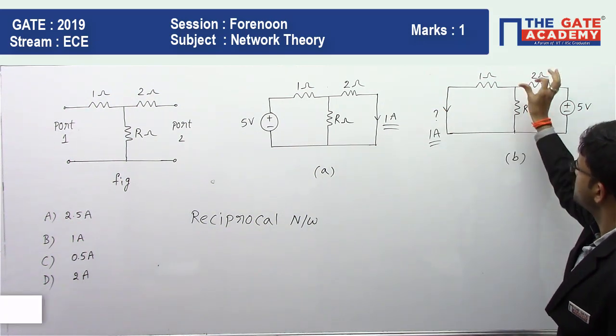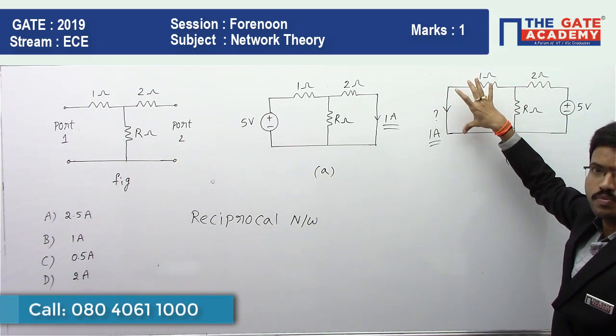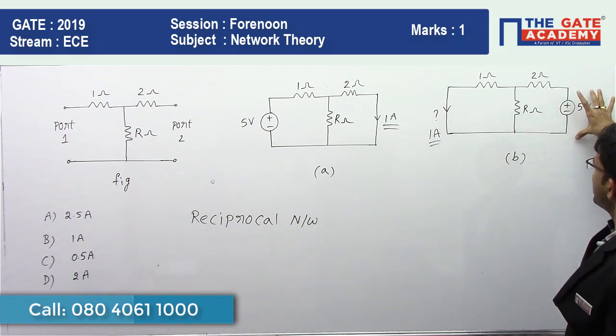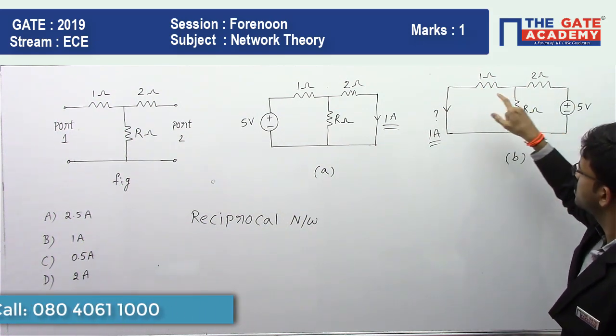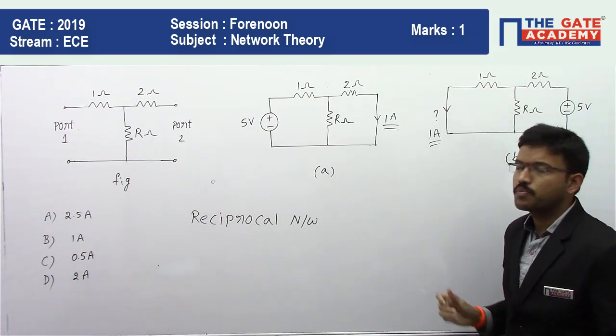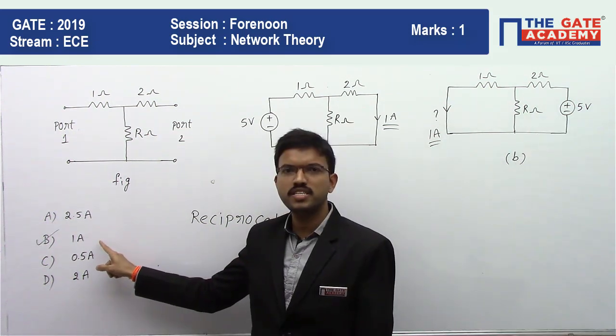That means the current flowing through the shorted terminals at port 1 when 5 volt source is applied here, the current flowing through this branch is 1 ampere. Option B is the correct answer.